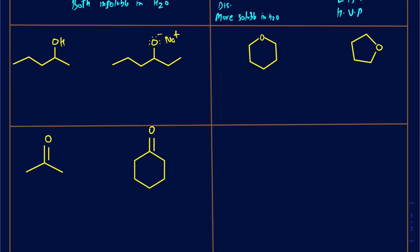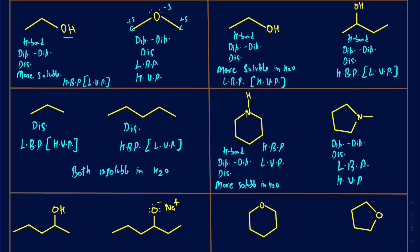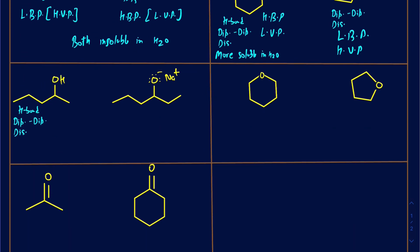Let's do the next one. This next one is similar to what we've done before — we've got an OH directly connected, so we will have all three different types of intermolecular forces. But on the right side, this is actually an ion — it's a salt. You've got a sodium salt, and as soon as you put it in water, it's going to dissolve, making ion-dipole interactions as well as dipole-dipole. So I'm going to say that's actually going to be an ionic compound that makes ions in water. As soon as you see a positive and negative charge in the molecule, that's going to be very soluble in water.